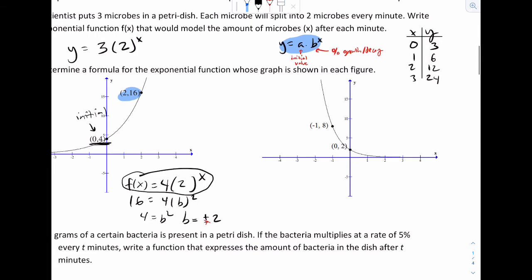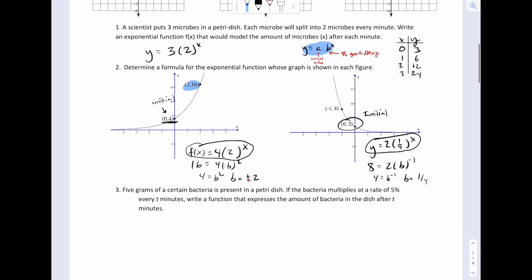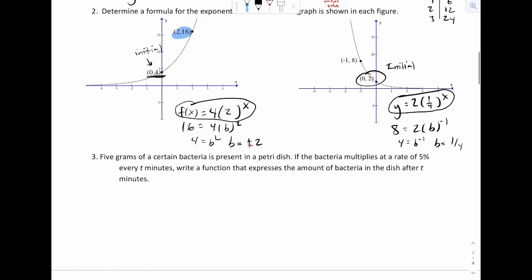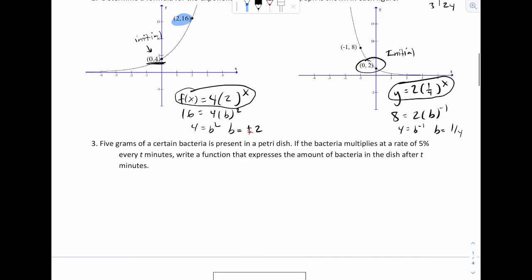And we'll do the same thing over here. Y is equal to, there's my initial, B to the X power. I'm going to plug in 8 negative 1. So 4 is equal to B negative 1, so B must have been a quarter. Inverse that, one quarter. Let's try one more. It says 5 grams of a certain bacteria is present in a Petri dish. It multiplies at a rate of 5% every 10 minutes. Write a function. So very similar, you're going to write Y is equal to 5. Now this is the hard part.